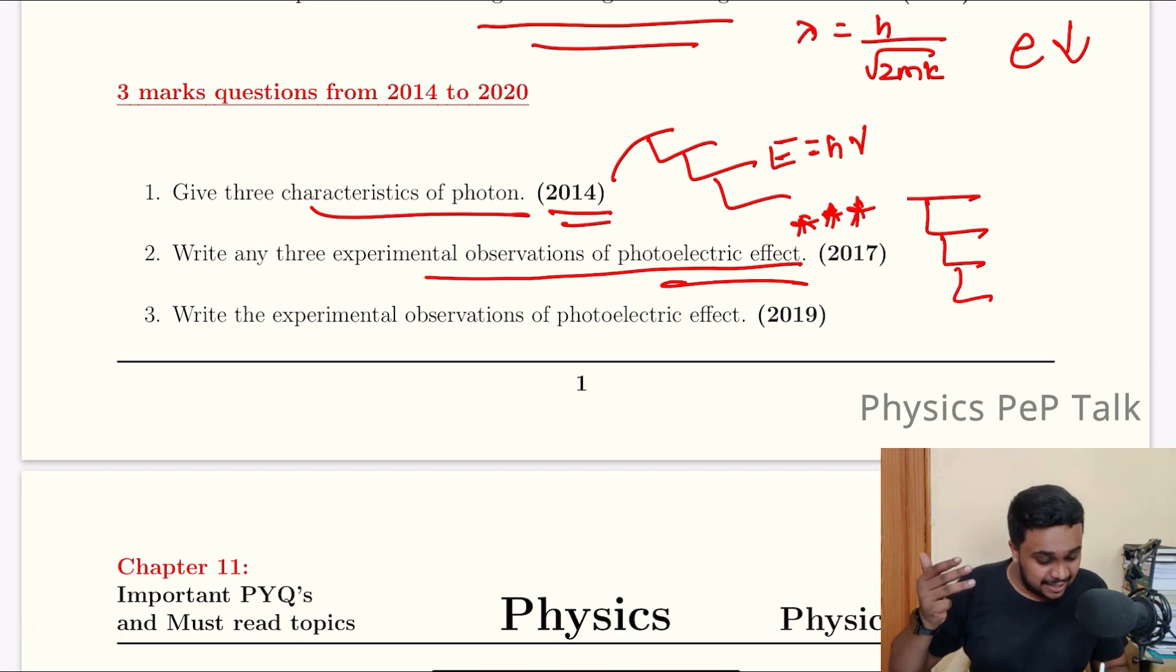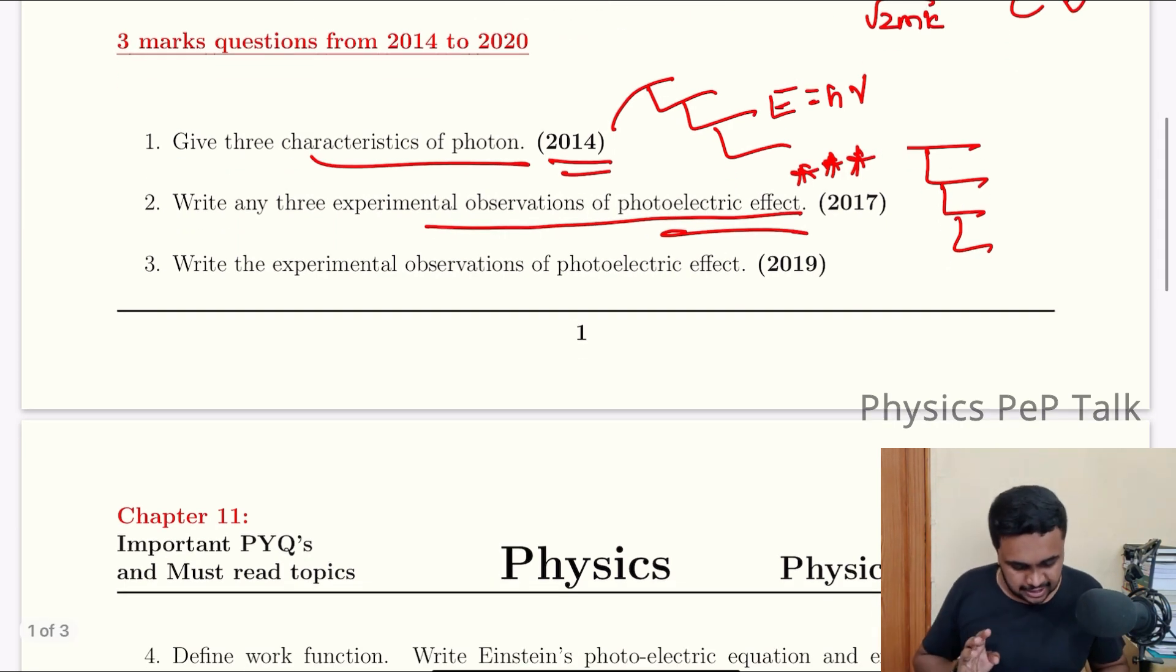And point number 4: The kinetic energy of the photo electrons depends upon the frequency of the incident radiation above the threshold frequency. These are the 4 experimental observations. You will be getting 3 marks.